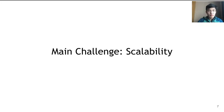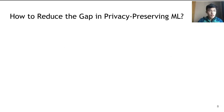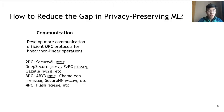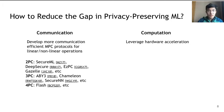To make privacy-preserving machine learning practical, our main challenge is scalability. Previously, when datasets and models are small, communication of MPC protocols is the major bottleneck, so it made sense to design more communication-efficient protocols for linear and nonlinear operations. However, as we scale to large datasets and models, computation of machine learning models becomes the major bottleneck. We can leverage hardware acceleration such as GPU acceleration to speed up these computations.